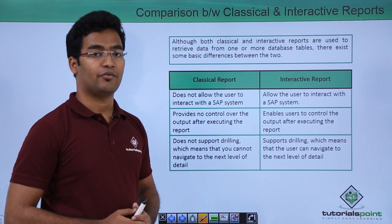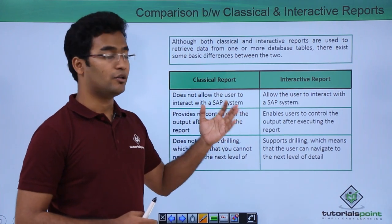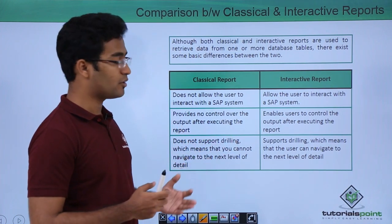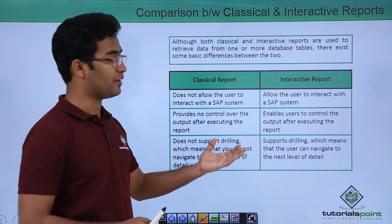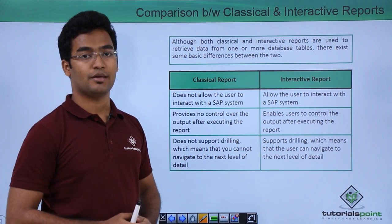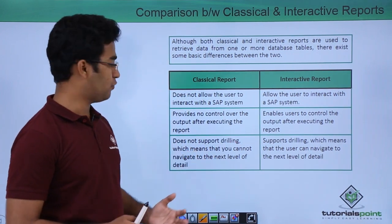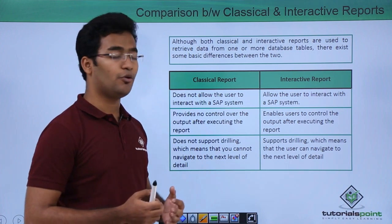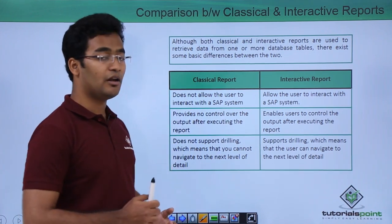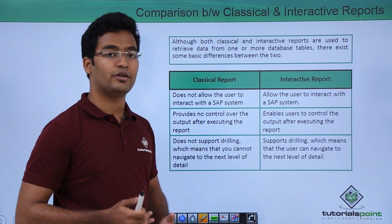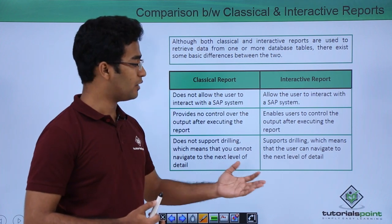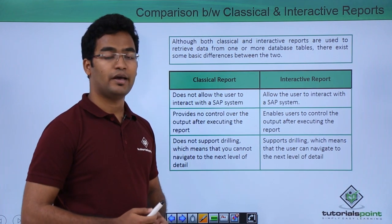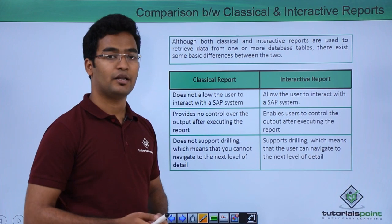Now let us compare classical and interactive reports. Even though they are both used for retrieving data from a database table, there are differences. Classical reports do not allow the user to interact with the SAP system, but interactive reports do. Classical reports provide no control over the output after executing the report, but interactive reports enable the user to control the output. In classical reports there is no secondary list — we cannot drill down the data — but interactive reports have functionality to drill down data, meaning when we double click on the basic list we can go to a secondary list.